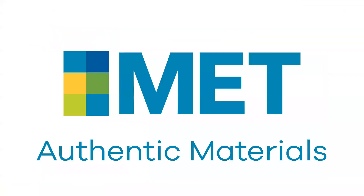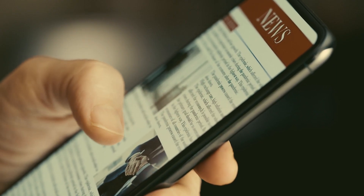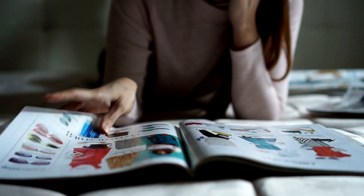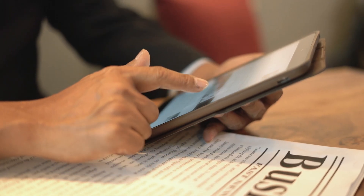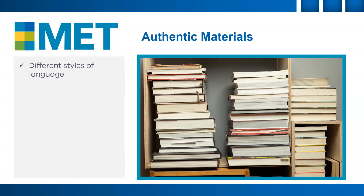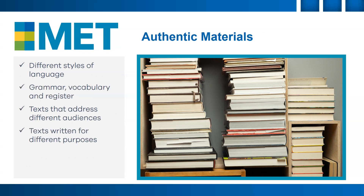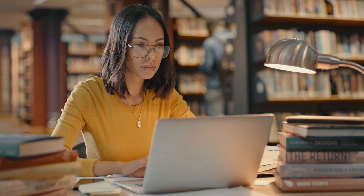It is a good idea to always use real or authentic reading materials when you practice, such as news articles, opinion essays, biographies, instruction manuals, short stories, political speeches, textbooks, and more. This will help expose you to different styles of language, grammar, vocabulary, and register; texts that address a range of audiences; and texts written for different purposes — both short and longer texts. All of these are important parts of your reading practice, so make sure you read a variety of different texts on different topics on a regular basis.